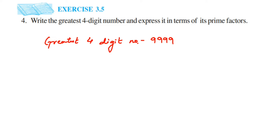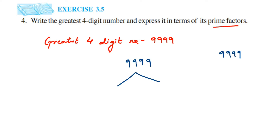We are going to use a factor tree method. Now for 9999, we have to use only prime numbers — prime factors. Two is the smallest prime number, but this number doesn't go into the two times table because it's an odd number. So we're going to start with three — this number definitely goes in the three times table. So we divide 9999 by 3.